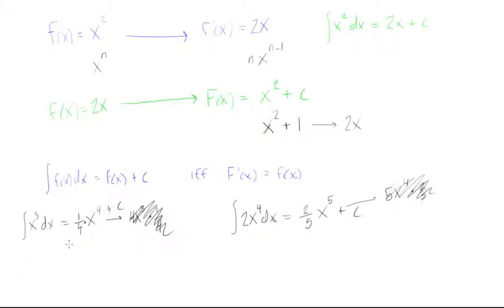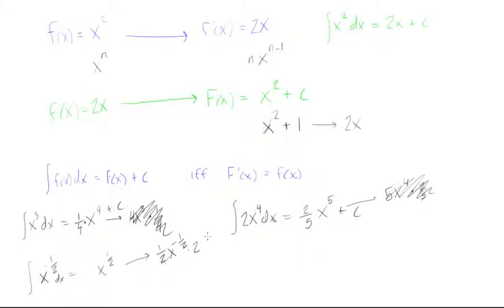We'll also do chain rule and addition rule examples. What if we had the integral of x^(-1/2) dx? We raise the power by 1, giving x^(1/2). When we differentiate x^(1/2) we get (1/2)x^(-1/2), but we want just x^(-1/2). So we multiply by 2 — those cancel — giving us 2x^(1/2), or 2√x plus C.